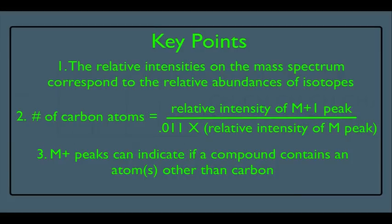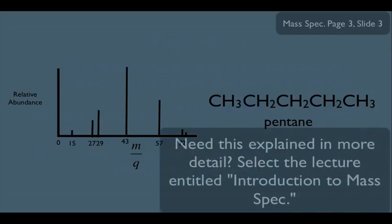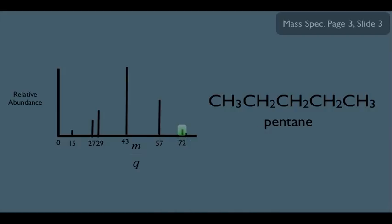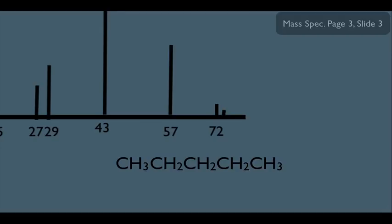Let's start with the first key point using the mass spectrum of pentane. We learned in a previous lecture that the heaviest peak most likely corresponds to the molecular weight of the molecule. Pentane has a molecular weight of 72, but notice that the 72 peak is not the heaviest peak — there's another small peak one unit bigger at 73. This is called an M-plus-1 peak, meaning the molecular ion plus one.